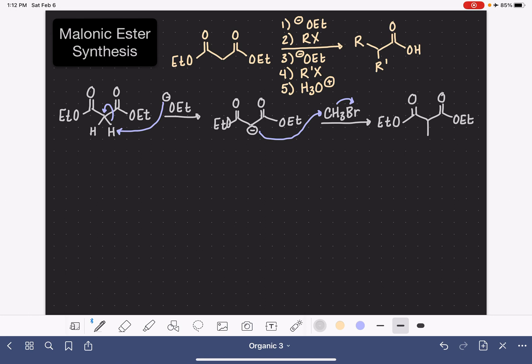If we wanted to add a second alkyl group, then we would just repeat those first two steps. Now I'm going to redraw that alpha hydrogen, and we're going to use ethoxide a second time. It's going to grab the second alpha hydrogen and make another enolate.